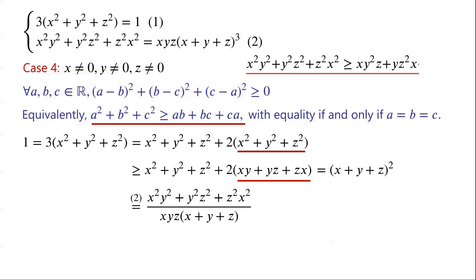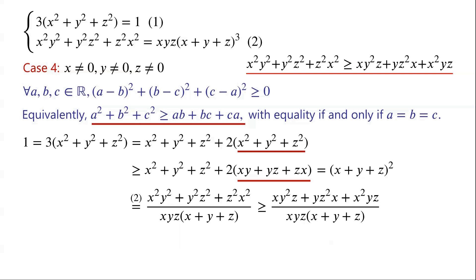Again from this inequality, we know that x²y² + y²z² + z²x² is greater than or equal to xy²z + yz²x + x²yz. So we can write the expression is greater than or equal to (xy²z + yz²x + x²yz) over xyz(x + y + z). The terms in the numerator have a common factor xyz, so they can be factorized and written as xyz(x + y + z), which is exactly the same as the denominator. So the fraction is 1.